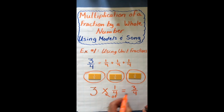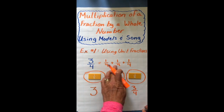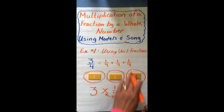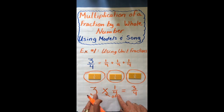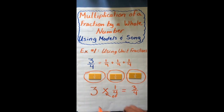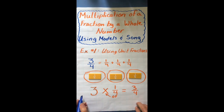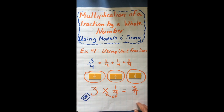Because this is repeated addition, we were able to change it into a multiplication problem. We could write it differently if we remember our multiplication — we have three groups of one-fourth.